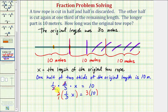Now we simplify. Notice here, we just get 1x or x equals 3 times 10, which equals 30.